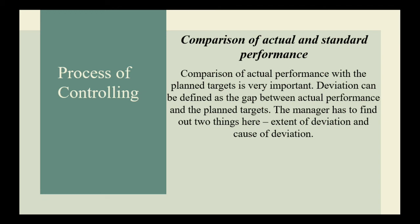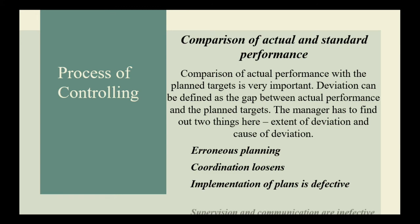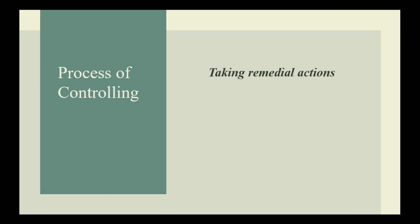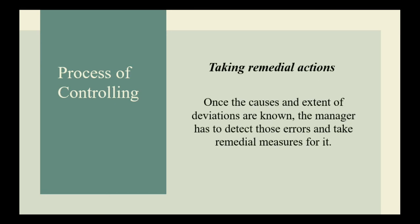The manager has to exercise control by exception — finding those deviations which are critical and important for business. Major deviations like replacement of machinery, appointment of workers, quality of raw material, and rate of profit should be looked at carefully. It is said that if a manager controls everything, he ends up controlling nothing. If monthly production decreases continuously, it is called a major deviation. Once a deviation is identified, a manager has to consider the various causes which led to it — such as wrong planning, loose coordination, defective implementation of plans, and ineffective supervision and communication. Lastly, taking remedial actions: once the causes and extent of deviations are known, the manager detects those errors and takes remedial measures.